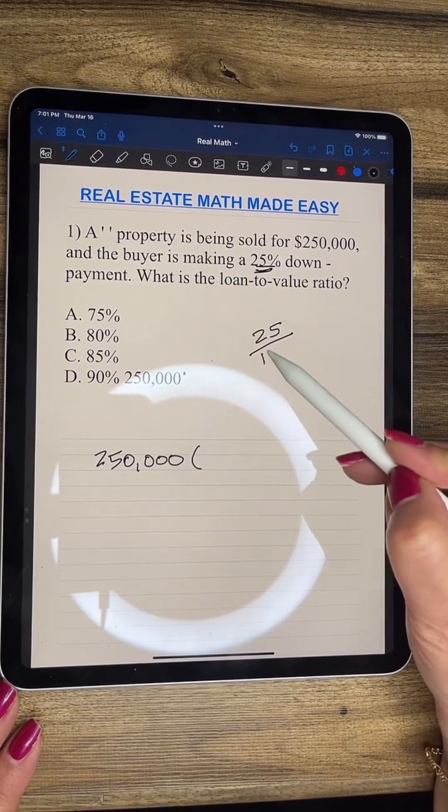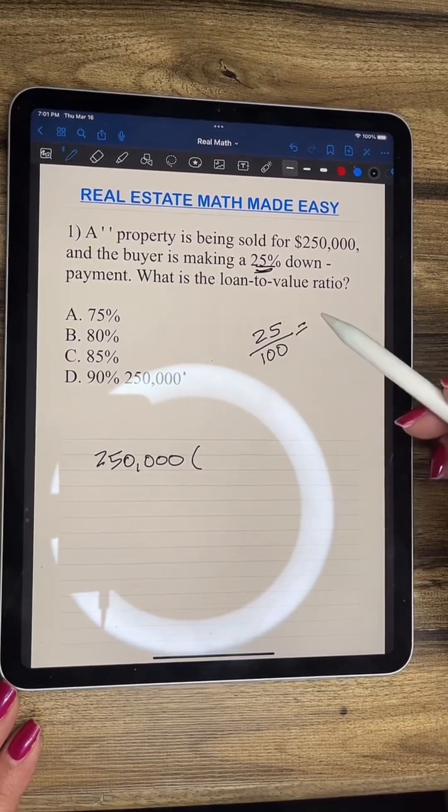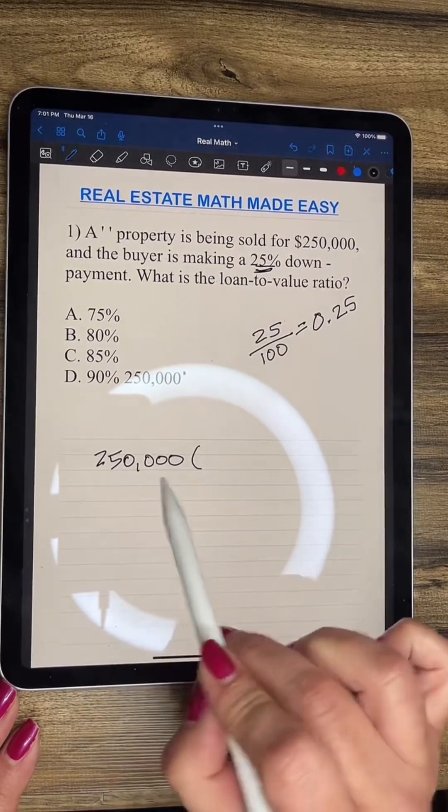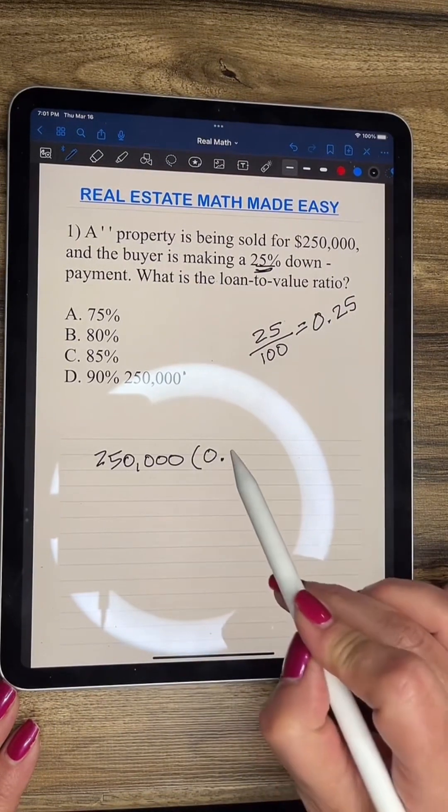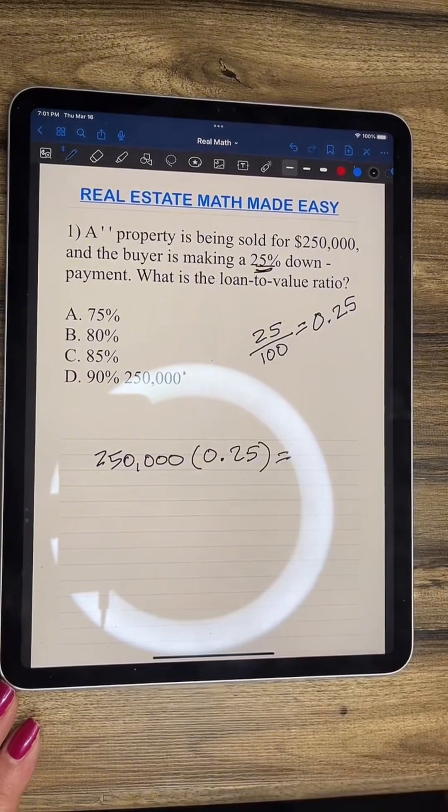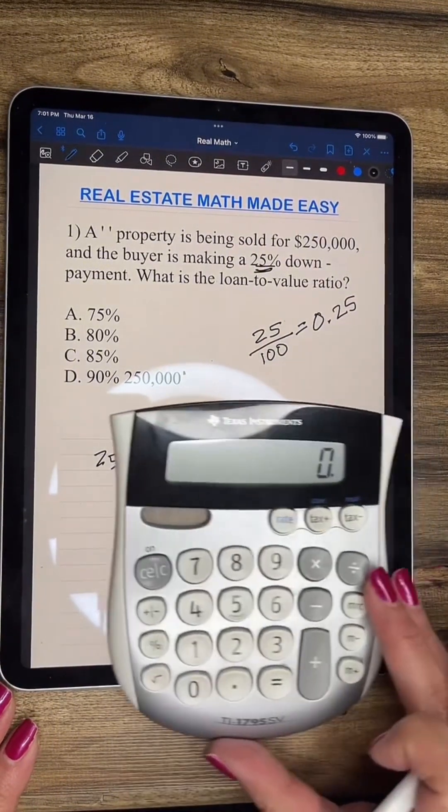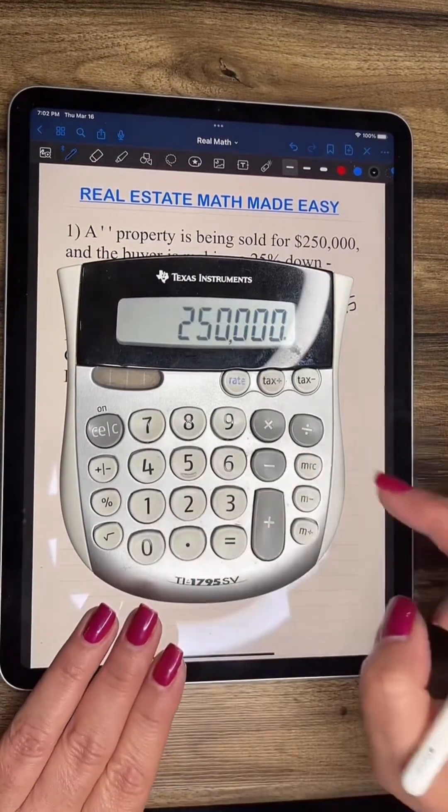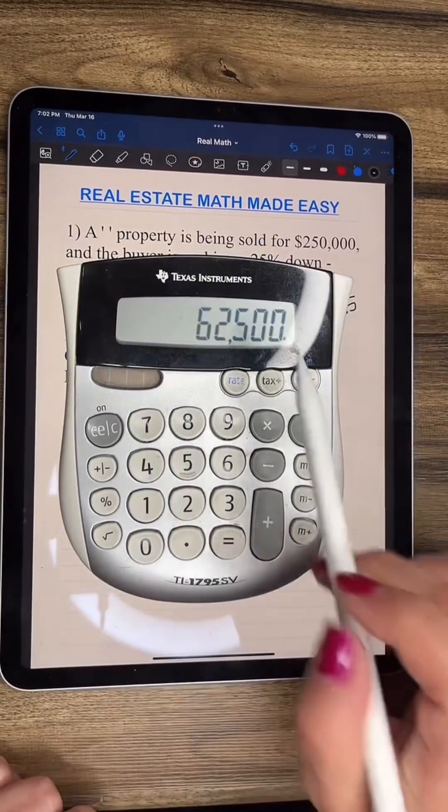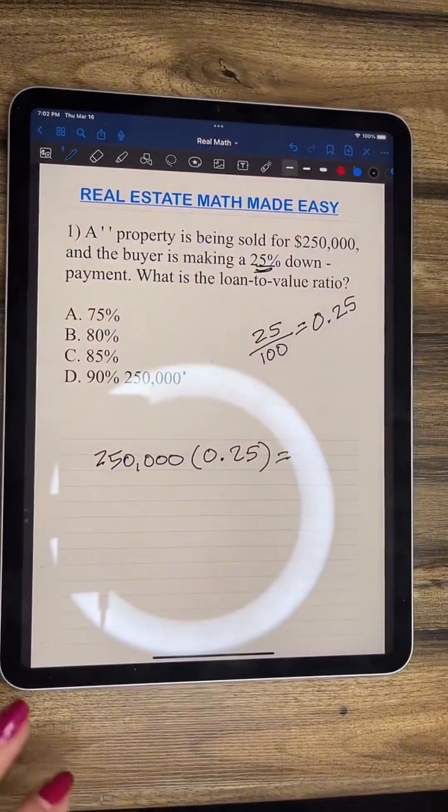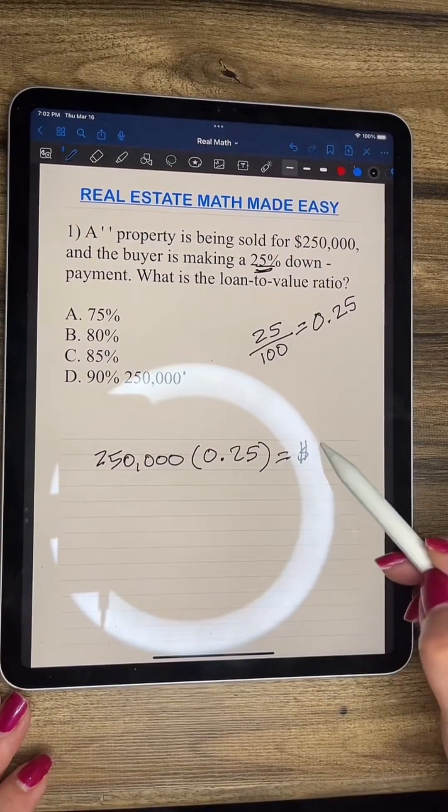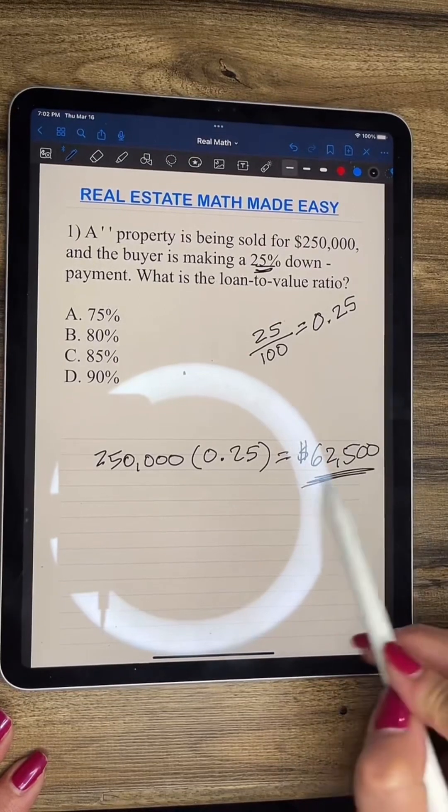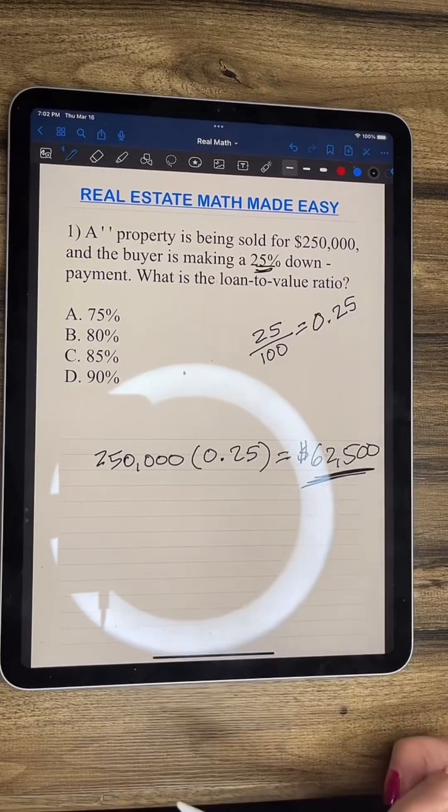Remember for any percent, we divide by 100. So that basically leaves us with 0.25. So $250,000 times 0.25 and then we get our calculator because you are allowed a calculator on the state exam. You have $250,000 times 0.25. That's going to give us $62,500. So this is how much down payment that they have to give in order to get a loan.